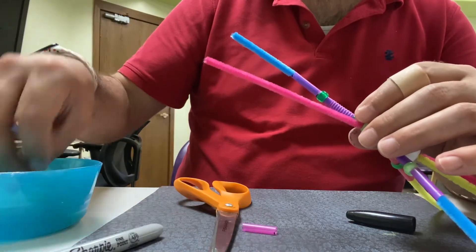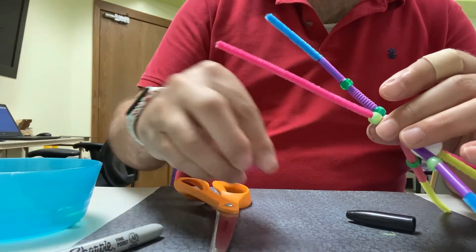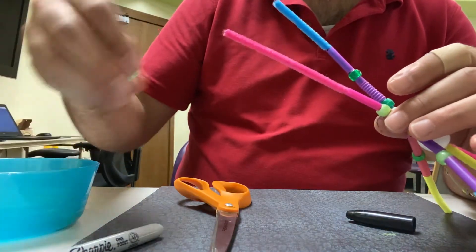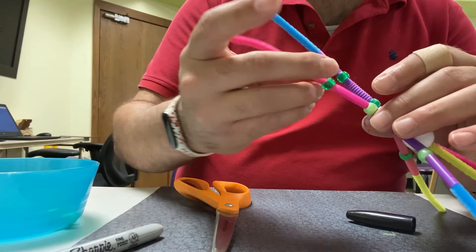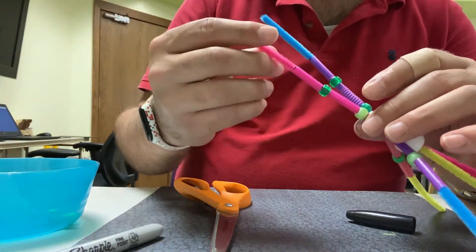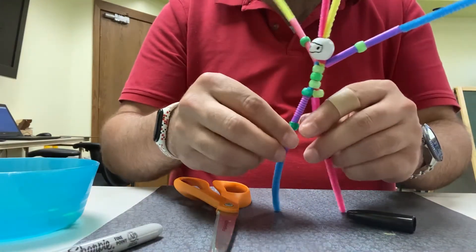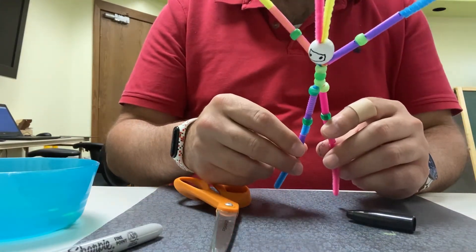Now we're going to do it on the other side. Take a pony bead, then a piece of straw and then a pony bead and then an extra straw. All right, as you can see now we have the arms and legs formed.